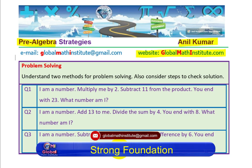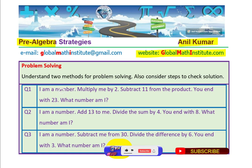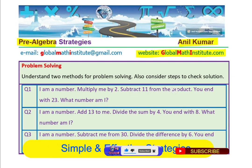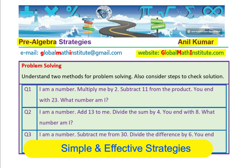Question number one: I am a number. Multiply me by 2. Subtract 11 from the product. You end up with 23. What number am I? These questions are meant for junior middle school students and we will solve them using basic steps, using algebra and backward calculations.